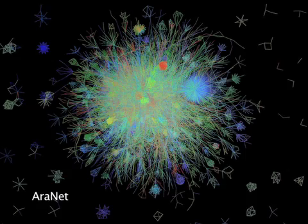Sue Rhee of Carnegie's Department of Plant Biology is a corresponding author of research regarding ARANET. ARANET is a computational model that can help predict the function of plant genes with unprecedented speed and accuracy.